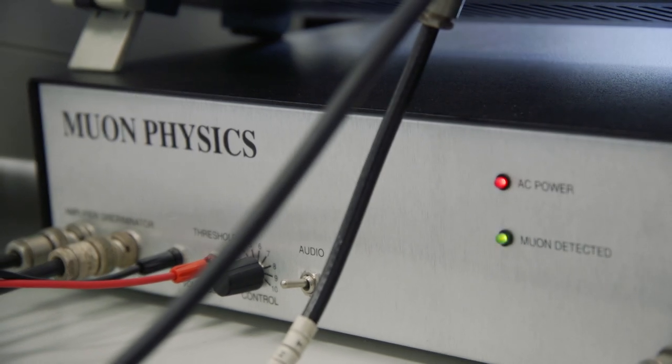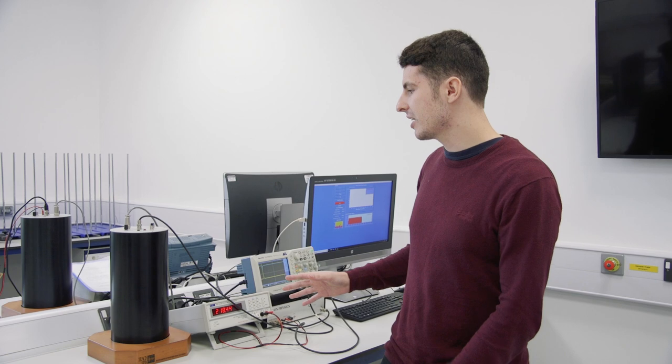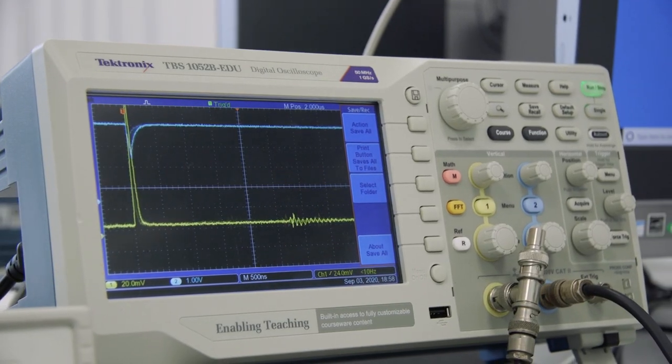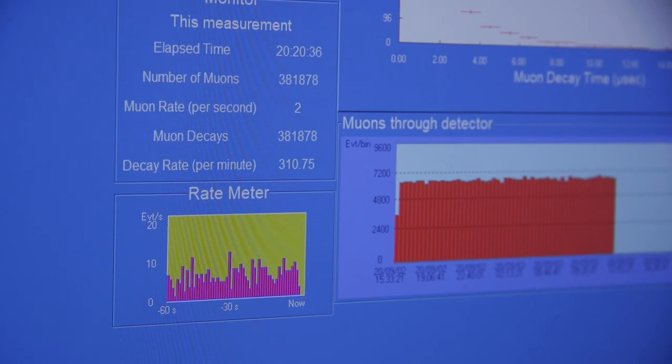Here we have a muon detector. When cosmic rays hit the atmosphere, they create these really small particles called muons, and they have a really short lifespan of a couple of microseconds, so we shouldn't expect to find them down here at sea level. Luckily, due to special relativity, we can, and using this detector here, we can then work out their decay rate and lifespan using a series of graphs and data.